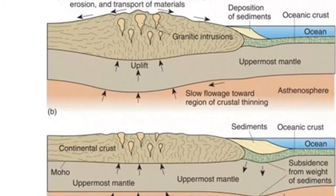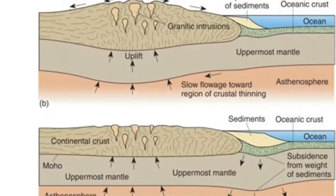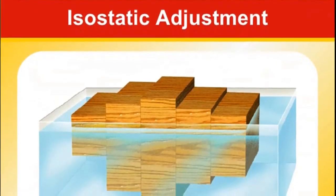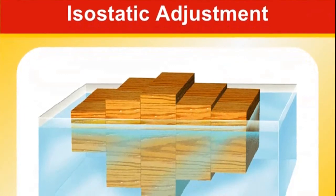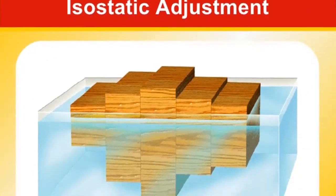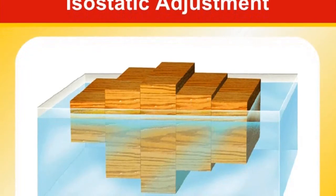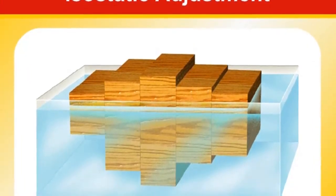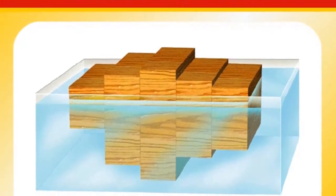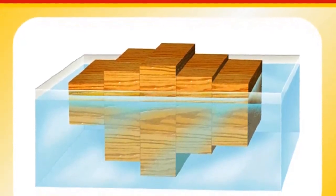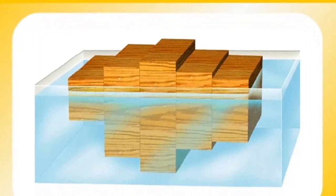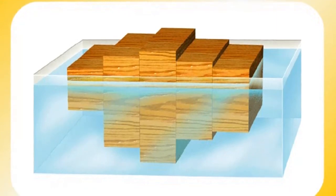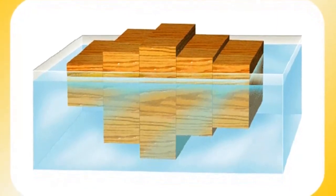Evidence for crustal uplift occurs along the west coast of the United States. When the elevation of a coastal area remains unchanged for an extended period, a wavecut platform develops. In parts of California, ancient wavecut platforms can now be found as terraces hundreds of meters above sea level. Such evidence of crustal uplift is easy to find; unfortunately, the reason for uplift is not always as easy to determine.